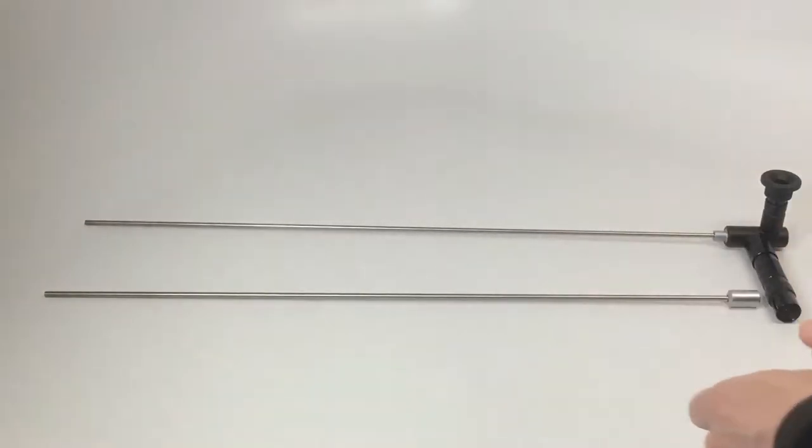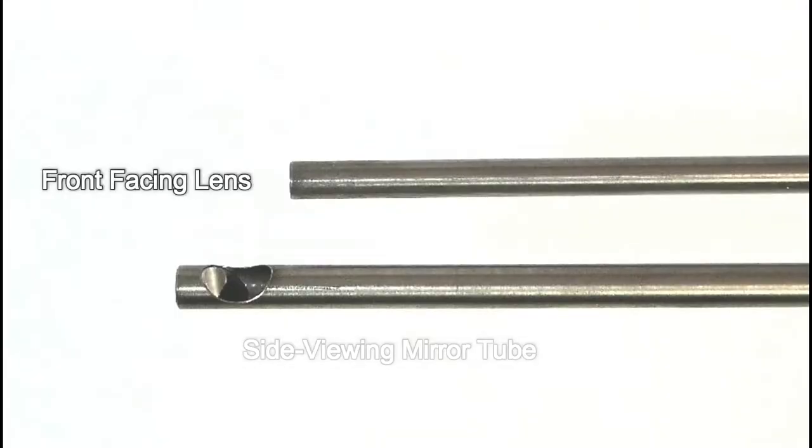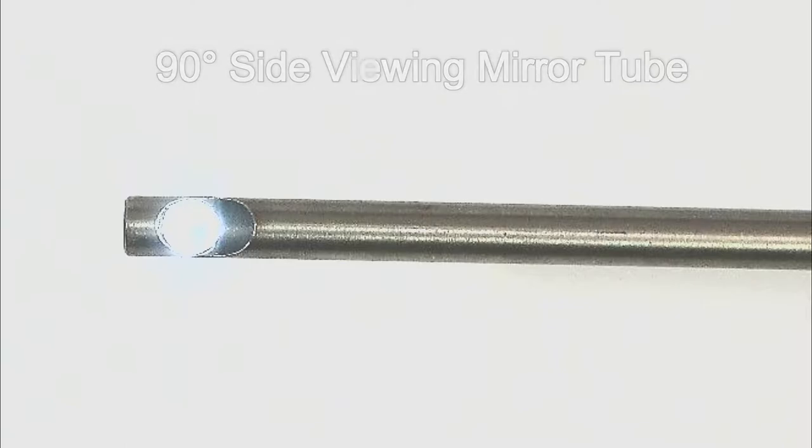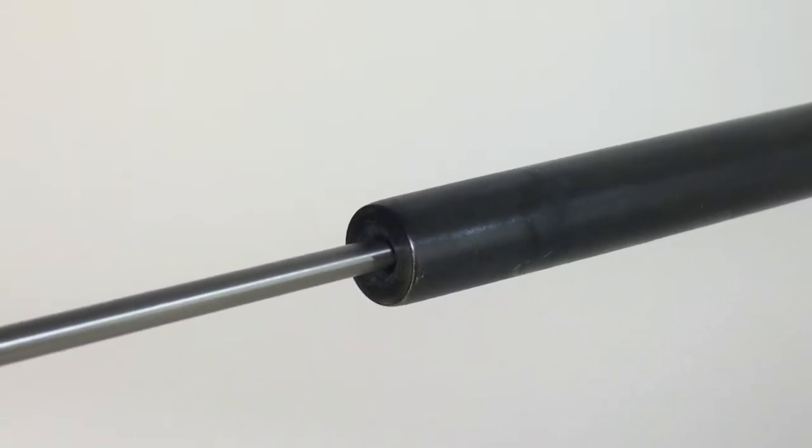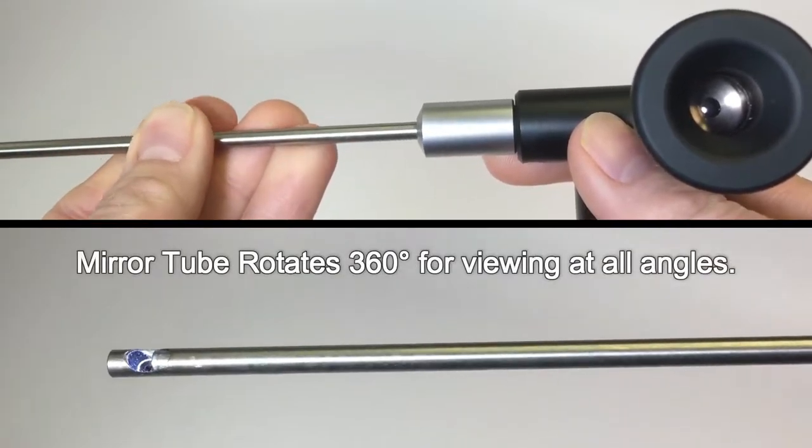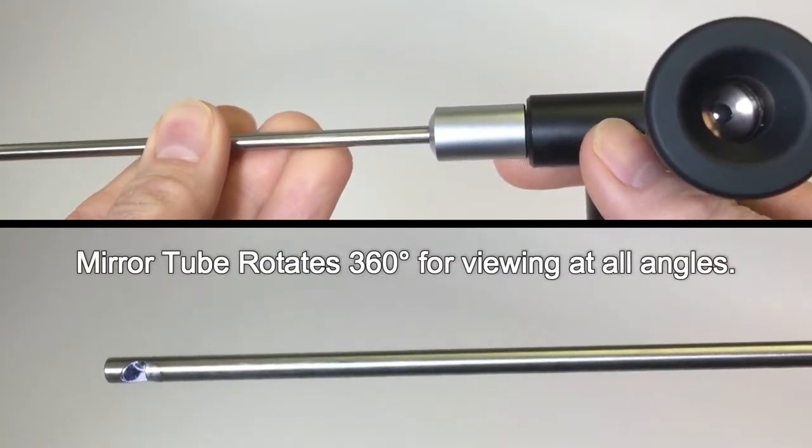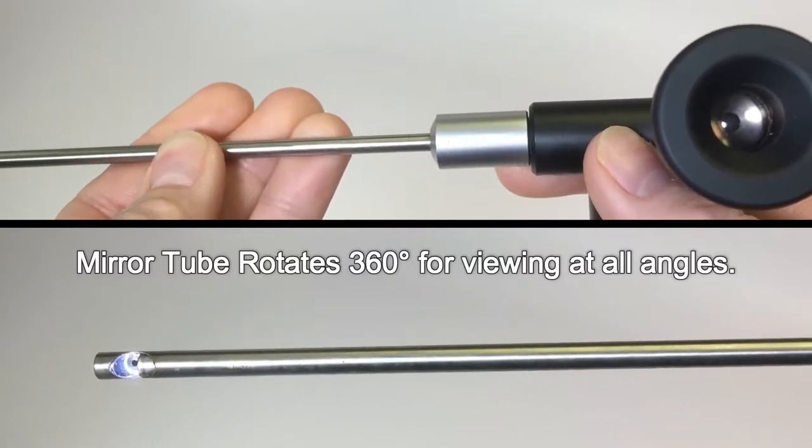This inspection camera features a front facing lens and side viewing mirror tube. Using the side view attachment allows the user to look at the walls of the barrel by directing the lens to a 90 degree angle, which then can be rotated 360 degrees at the base to view the barrel at every angle.